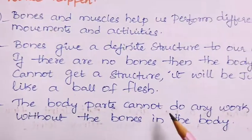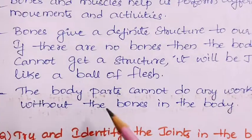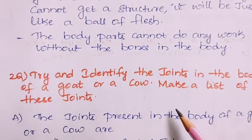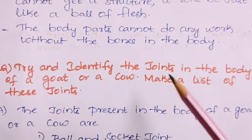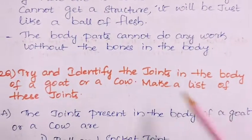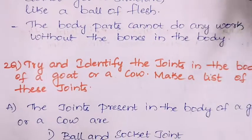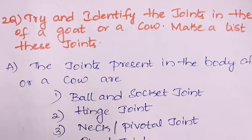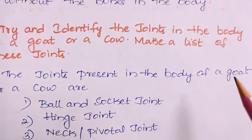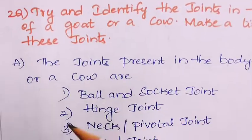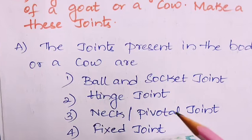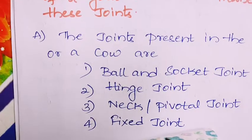The body parts cannot do any work without the bones. Now the second question: try and identify the joints in the body of a goat or a cow and make a list of these joints. The joints present in the body of a goat or a cow are: ball and socket joint, hinge joint, neck or pivotal joint, and fixed joint.